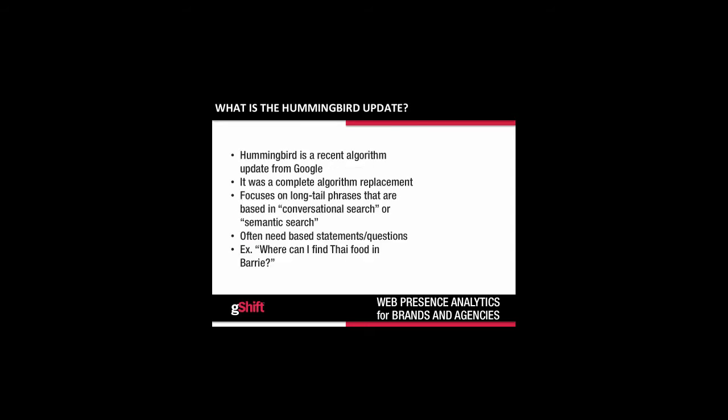So what is Hummingbird? The Hummingbird Update is a recent algorithm update from Google, which was released in August of 2013 and announced to the public in September. They had it running in stealth mode for one month before actually letting anybody know that it had taken place.